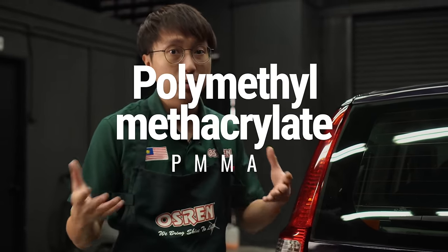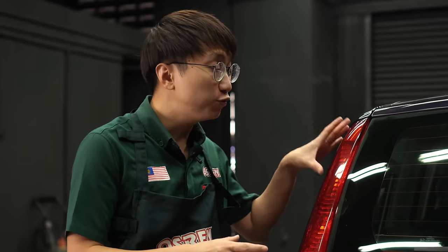If you have ever wondered why tail lights do not yellow as compared to headlights, this is because they are mostly made out of a different material called polymethyl methacrylate or PMMA. PMMA is very resistant to UV and weathering. However, when compared to polycarbonate they are more brittle and easier to crack, which is why they are not used for headlights.